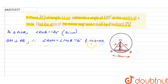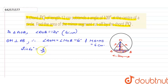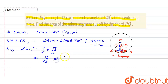MA equals MB equals 6 centimeters, because the total chord length is 12 cm. Now, sin(angle AOM) equals sin 60° equals 6 divided by r (perpendicular upon hypotenuse). Since sin 60° = √3/2, the value of r equals 12 divided by √3, which equals 4√3 centimeters.